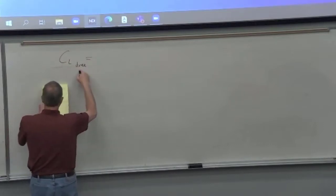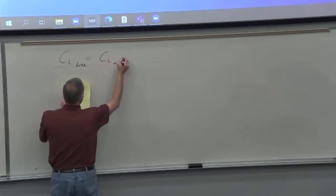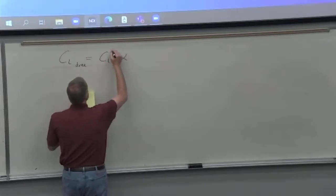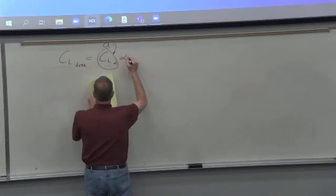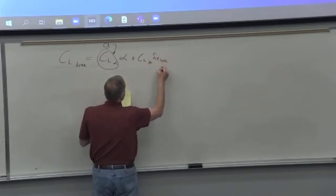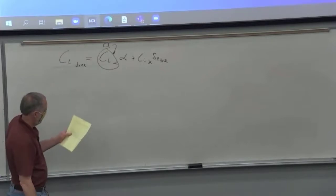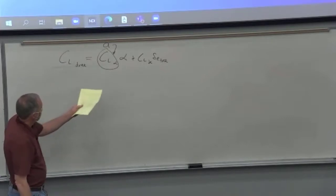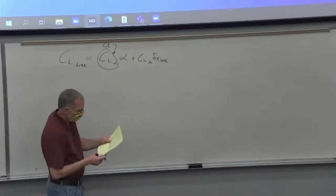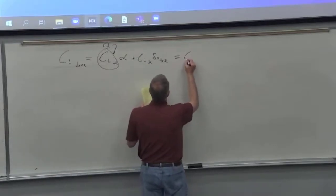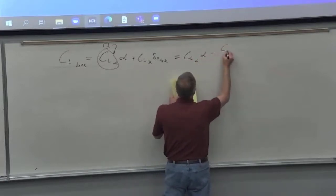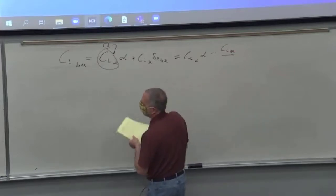We'll call it CL free because it's the stick free case. This is also what we call A, remember? So I'm writing as CL alpha. There's what we're going to put in the free elevator. Because it's going to affect the lift. Wherever the elevator floats to, we get a different lift. We just substitute that in there. So we get CL alpha, alpha minus CL delta E.